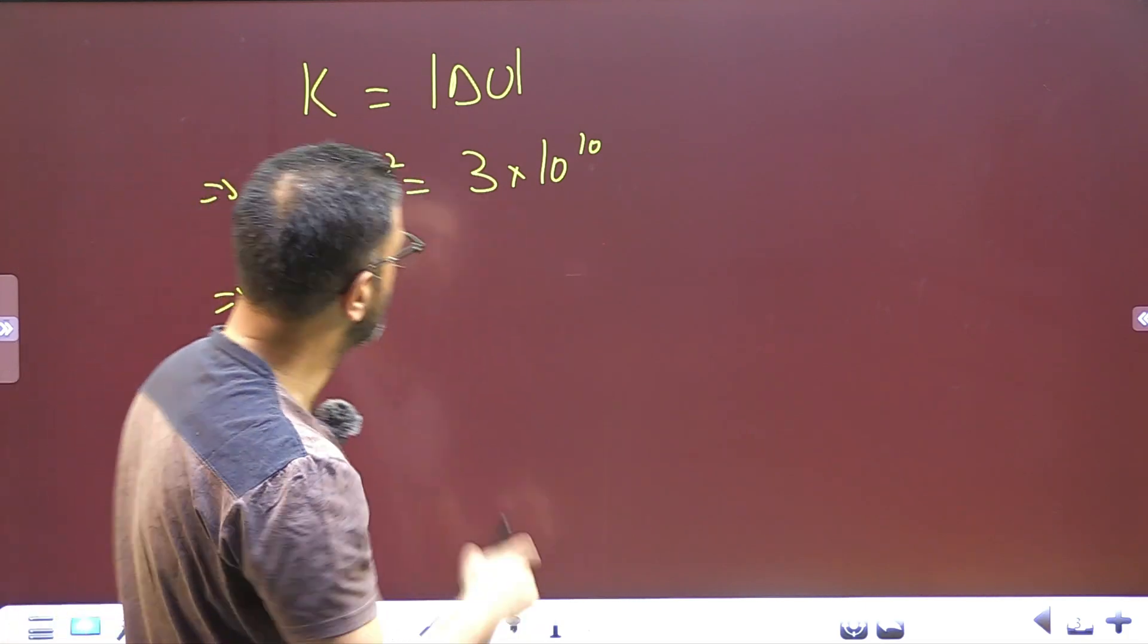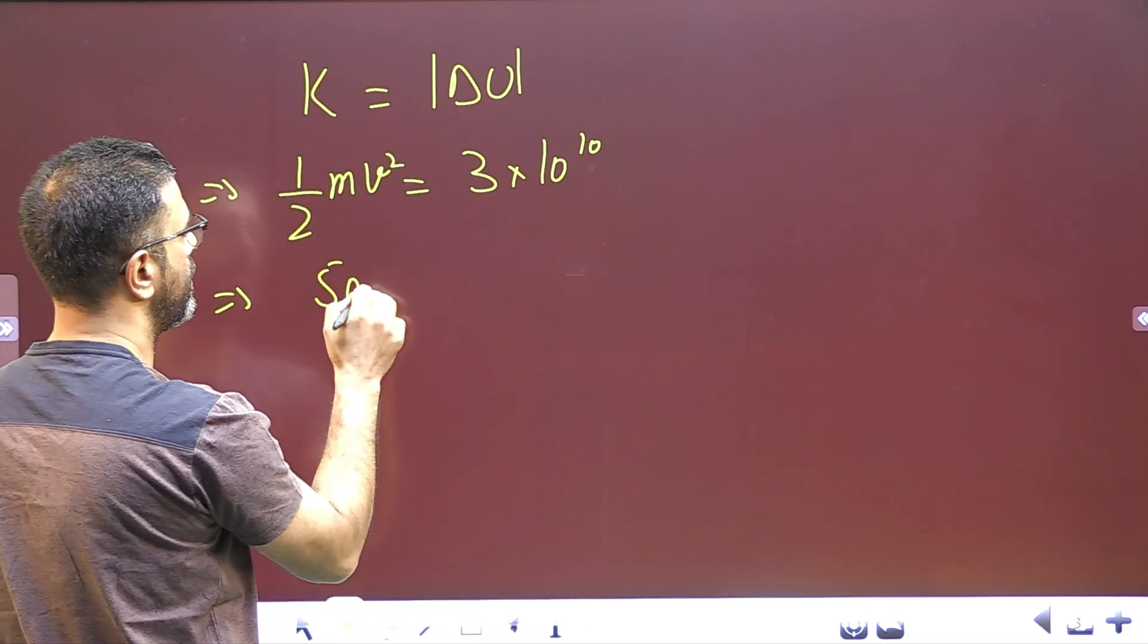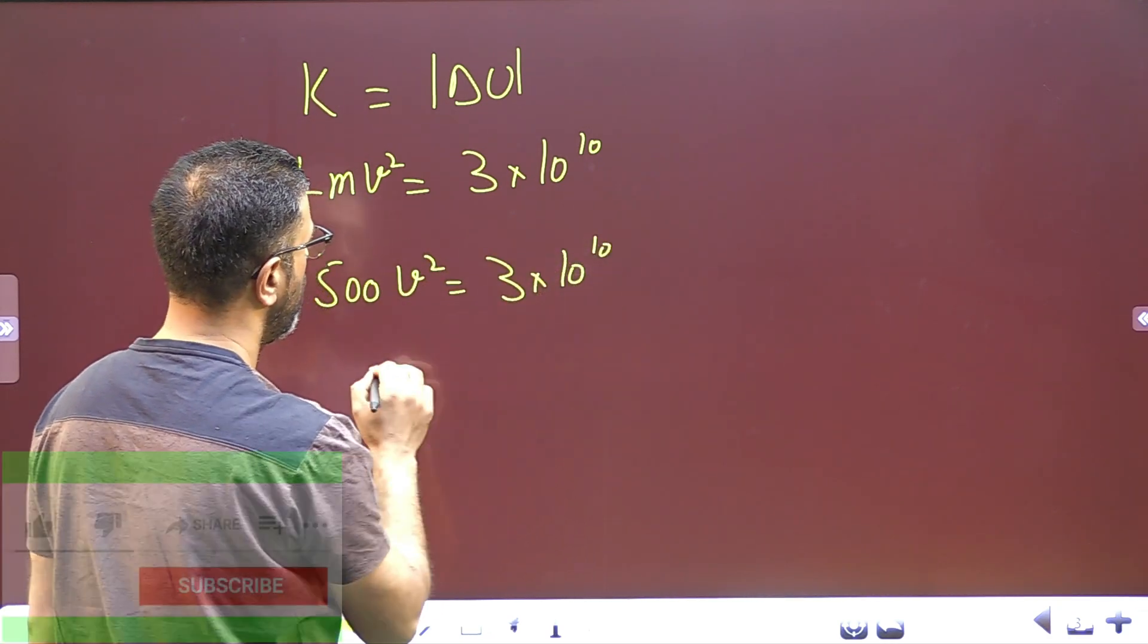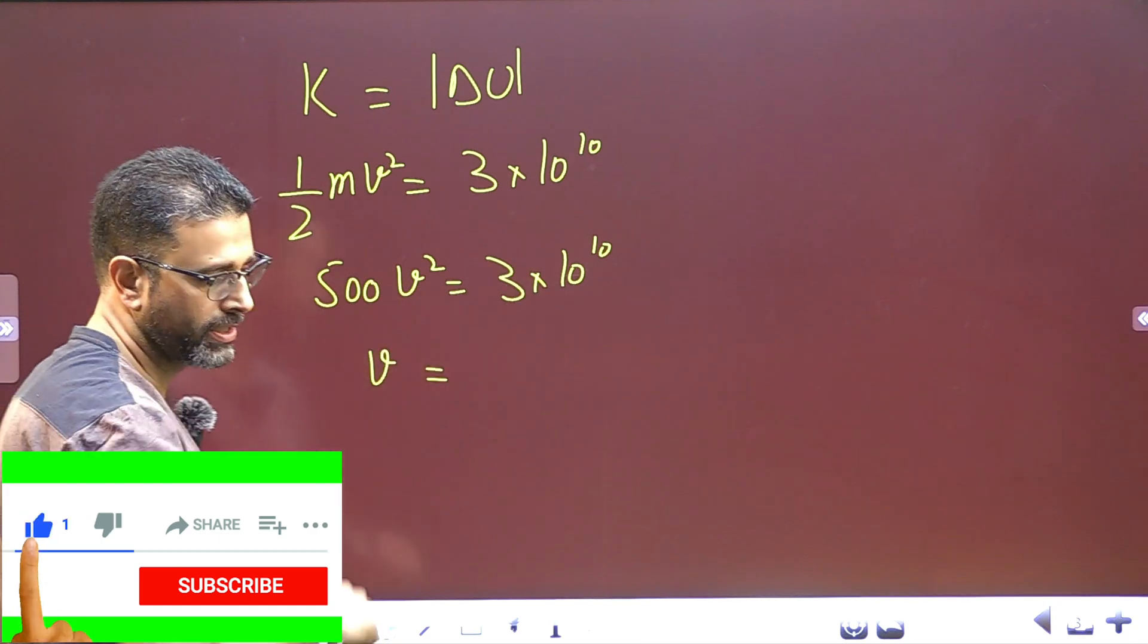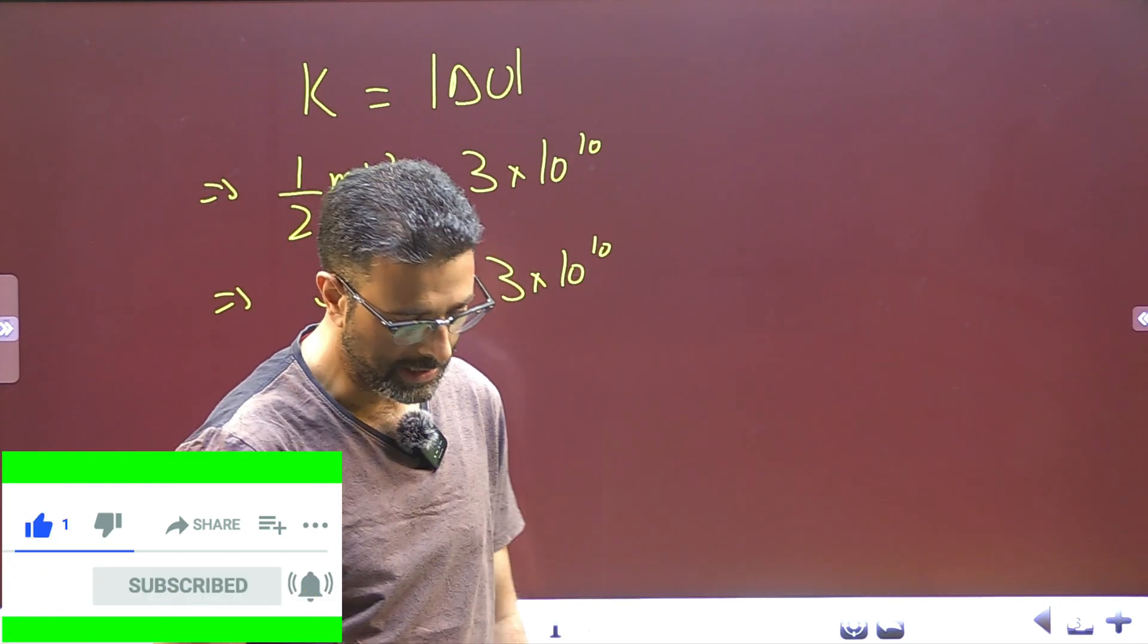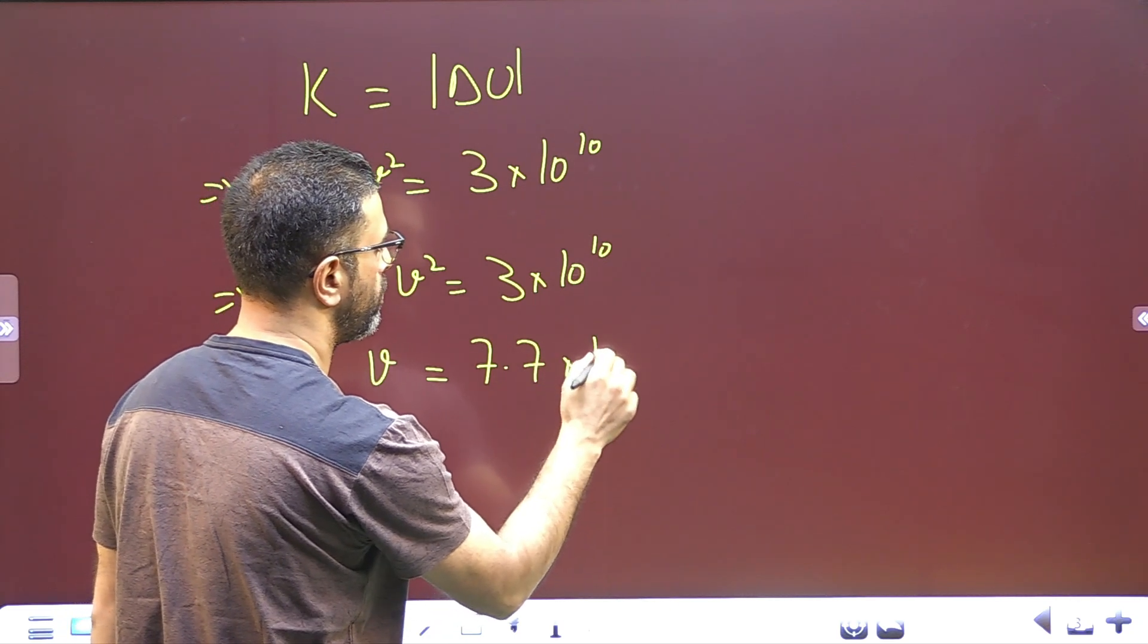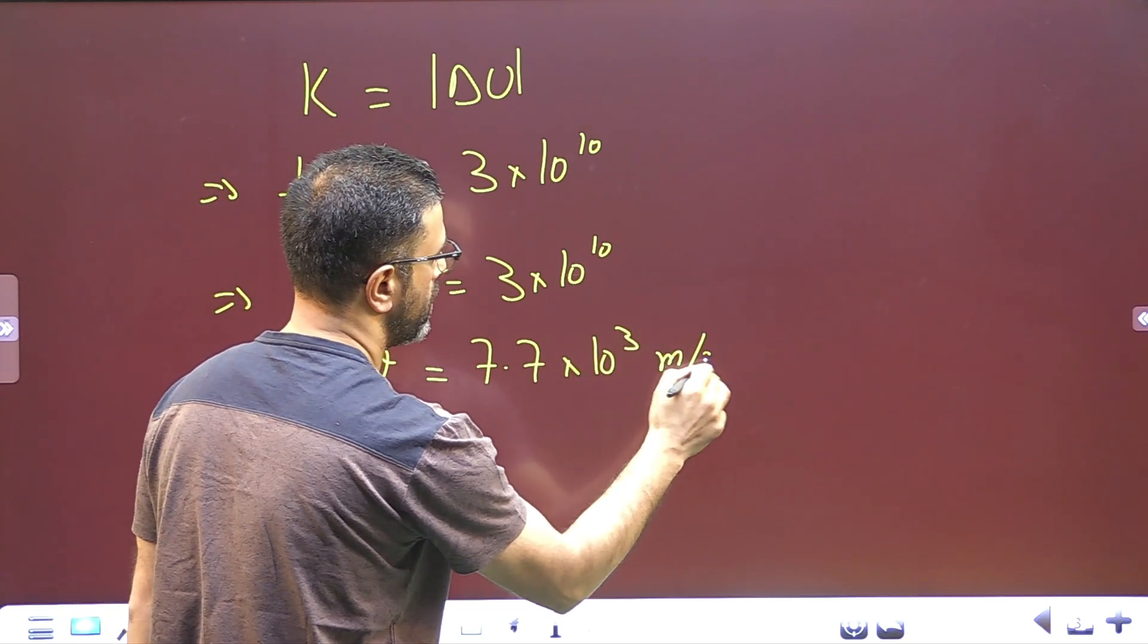M is 1000, so 1000 by 2 is 500. V squared is equal to 3 into 10 to the power 10, or V is equal to, you just have to work this out, I have already done that. It comes out to be 7.7 into 10 to the power 3 meters per second.